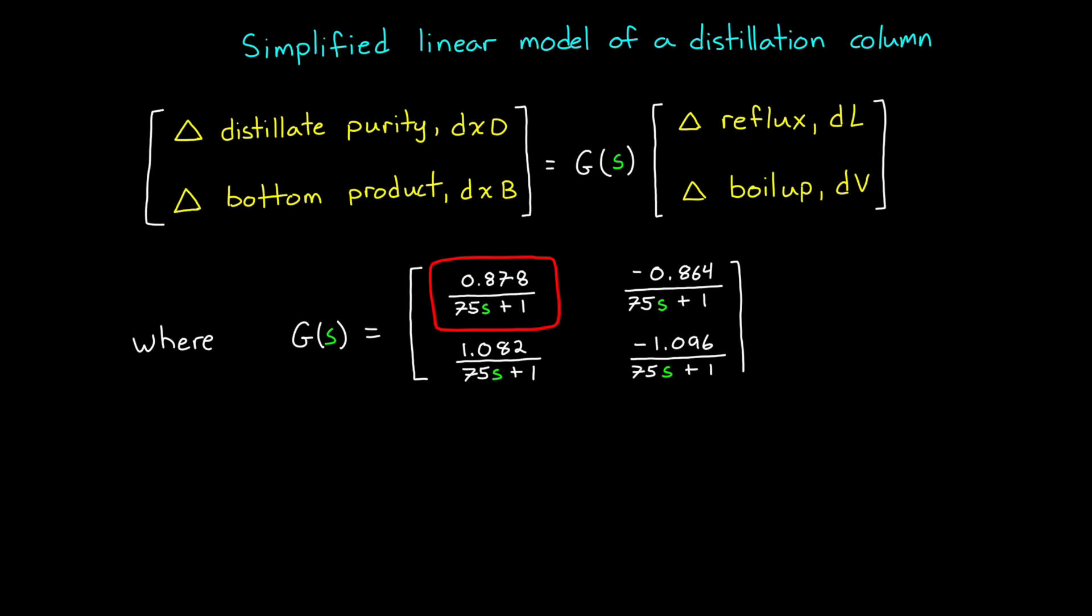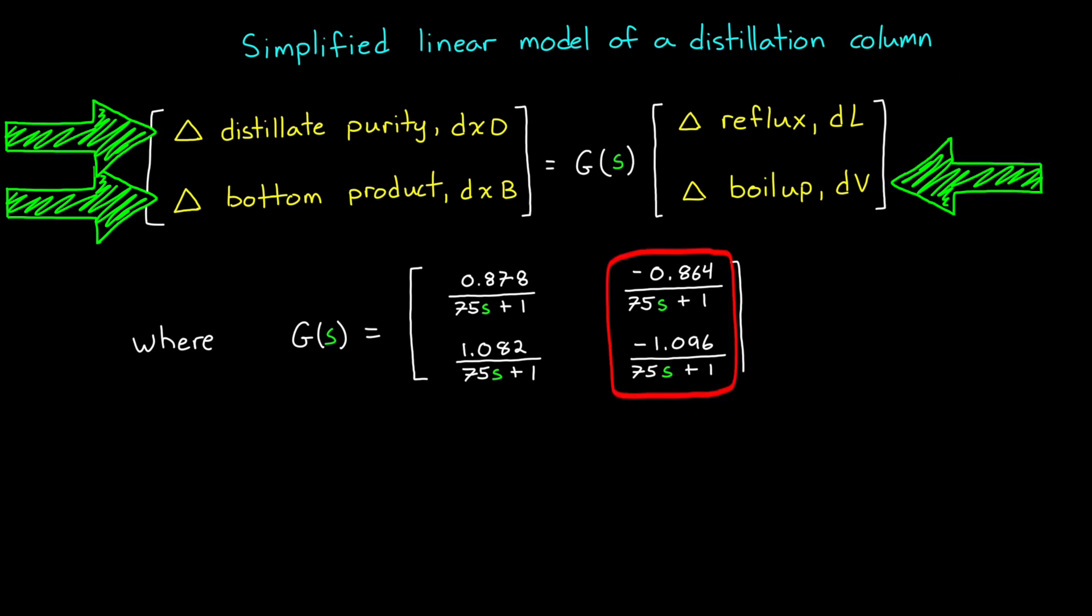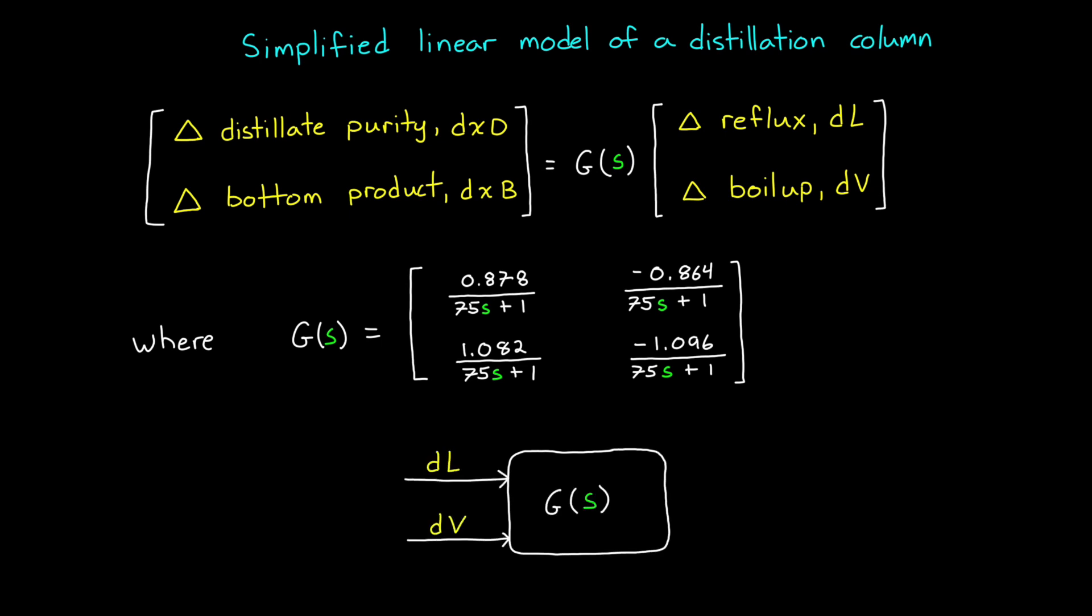And the way to read this is that the top left transfer function describes the response between the reflux and the bottom product. And the two on the right are then for the boil up input. So in this way, we can see how each of the two inputs affect each of the two outputs. And every input-output relationship is governed by a first order response with time constant tau equals 75 minutes, but each with a different gain.